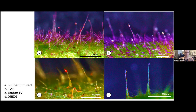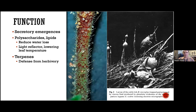Thinking about the function of the secretory emergences, they are probably related to reducing water loss and act as light reflectors lowering leaf temperature. Because they contain terpenes, they can also act as a defense against herbivory. A very interesting article has shown that larvae of the cattle tick are trapped and poisoned by the viscous fluid produced by these secretory emergences. Looking at other Dalbergieae, Solar Radar's extensive work on anatomy of undershrubs detected multicellular shaggy hairs in several Dalbergieae specimens, so perhaps these emergences are more widespread in the Dalbergieae group, but further studies are needed.